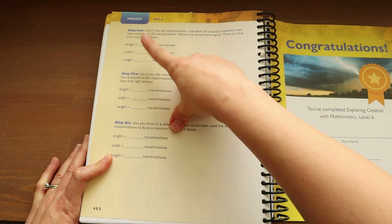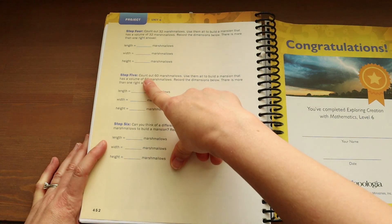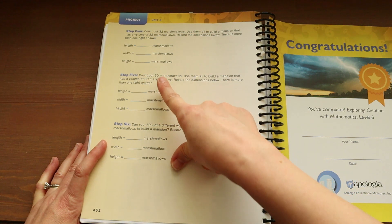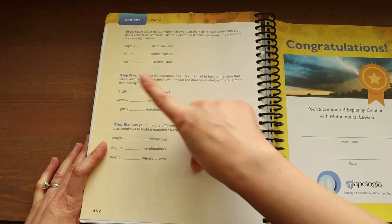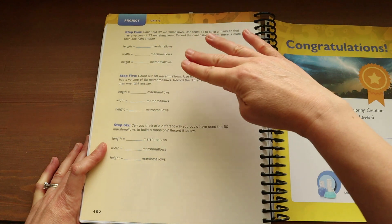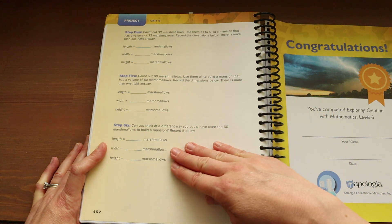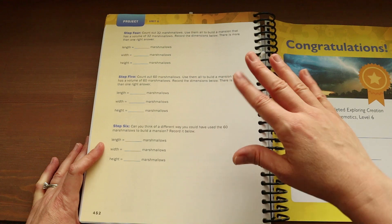So, they'll consider length, width, and height. They will do the same thing in step five with 60 marshmallows. And this also mentions how there is more than one right answer. And then step six is them continuing to use 60 marshmallows, but coming up with a different way that they could have used them. And so, I think that's fun.